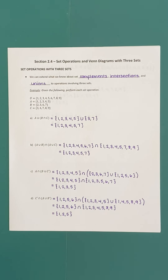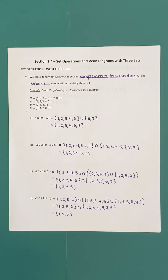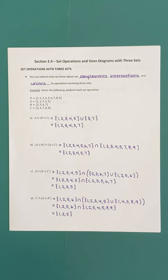In the last video we talked about Venn diagrams and set operations involving two sets. In this section we're going to do essentially the same thing, but we're going to look at the operations and the diagrams from the standpoint of three sets. All the same set operations are defined for as many sets as we want. The complement can be thought of as set subtraction — take the universal set, remove all the elements in a particular subset, and what remains is the complement of that subset.